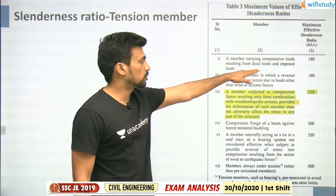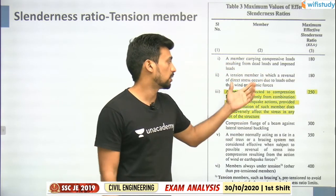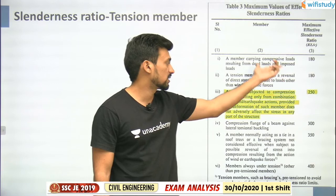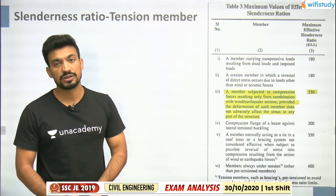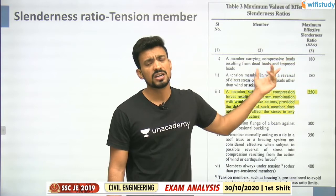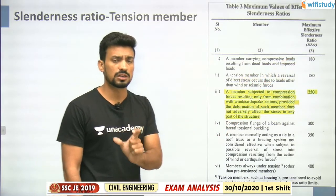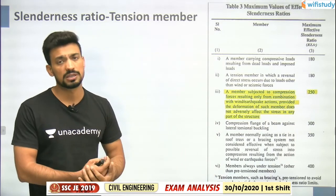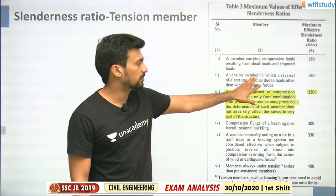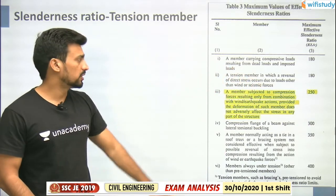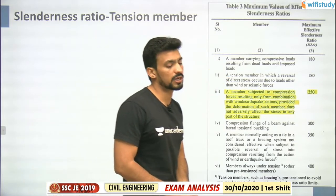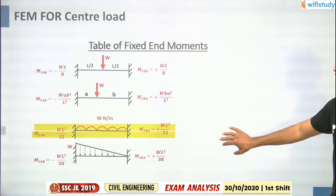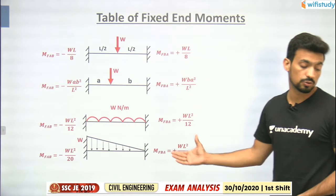Slenderness ratio: we consider 1.8 for tension members in which reversal of direct stress occurs due to loads other than wind or seismic force - the answer is 180. That is most probably what was asked. For fixed end moment, which has come three times, you must remember all standard cases.